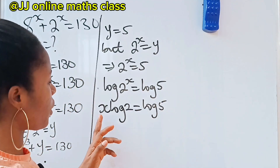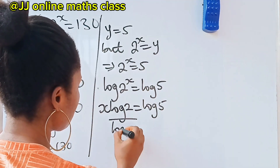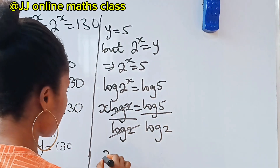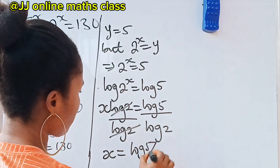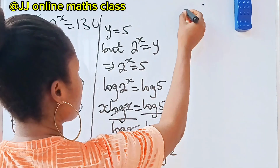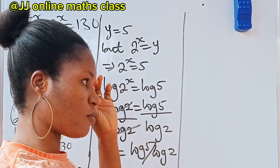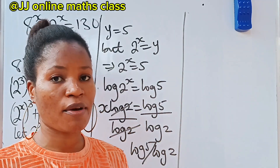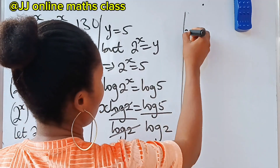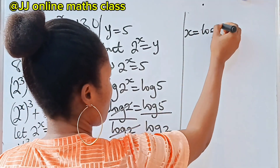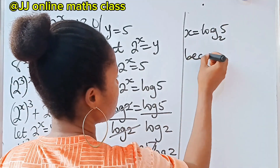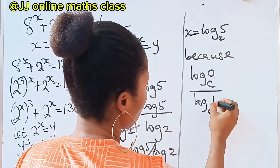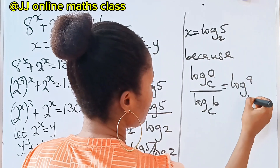We are looking for x, so we divide both sides by log 2. We get x equals log 5 divided by log 2. If this is the first time you're on this channel, please subscribe and turn on your notification bell. So x equals log base 2 of 5, because log c of a divided by log c of b equals log base b of a.